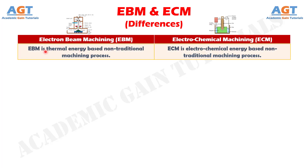Difference number 1: Electron beam machining is a thermal energy based non-traditional machining process, whereas electrochemical machining is an electrochemical energy based non-traditional machining process.